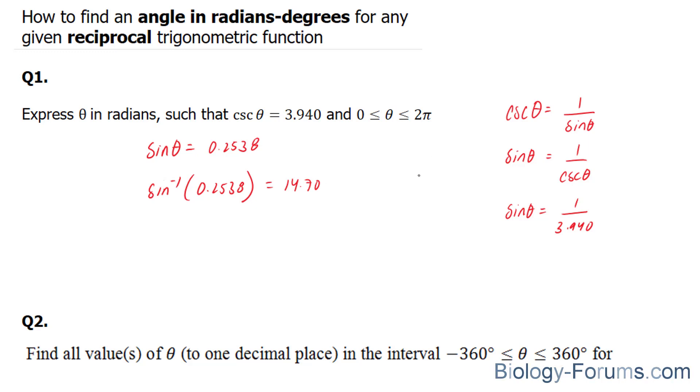The next thing we'll do is look at the CAST rule. The CAST rule is quite simple. It tells us where the trigonometric functions will be positive. Cosine is positive here, all are positive here, only sine is positive here, and only tangent is positive here. So sine will be positive here and here.